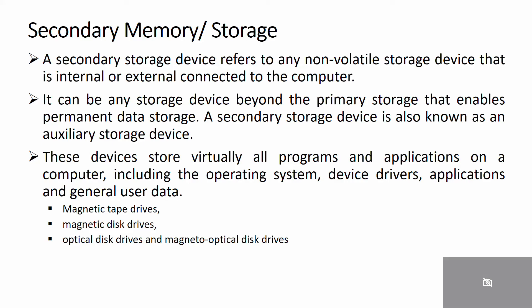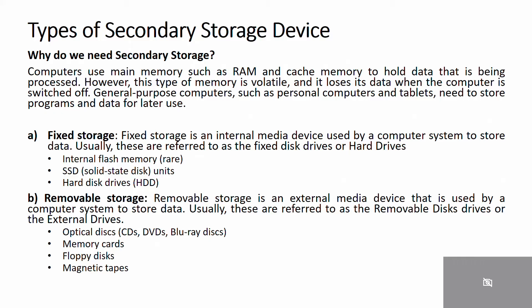Now we move to the next slide: types of secondary storage devices. Before we start, we need to know why we need secondary storage. A computer uses main memory such as RAM and cache memory to hold data being processed. However, this type of memory is volatile and loses its data when the computer is switched off. General purpose computers such as personal computers and tablets need to store programs and data for later use.